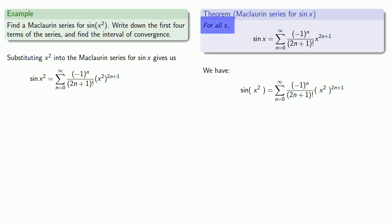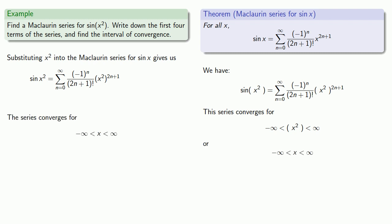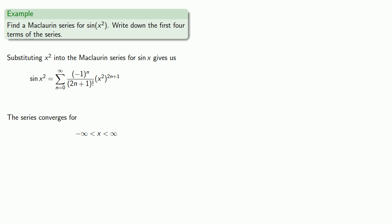The Maclaurin series for sine converges for all x — that is, it converges for everything between minus infinity and infinity. In this case, since our input is x squared, we substitute that in, which tells us the series converges for everything between minus infinity and infinity. The first four terms of the series will be for n equals 0, 1, 2, and 3.